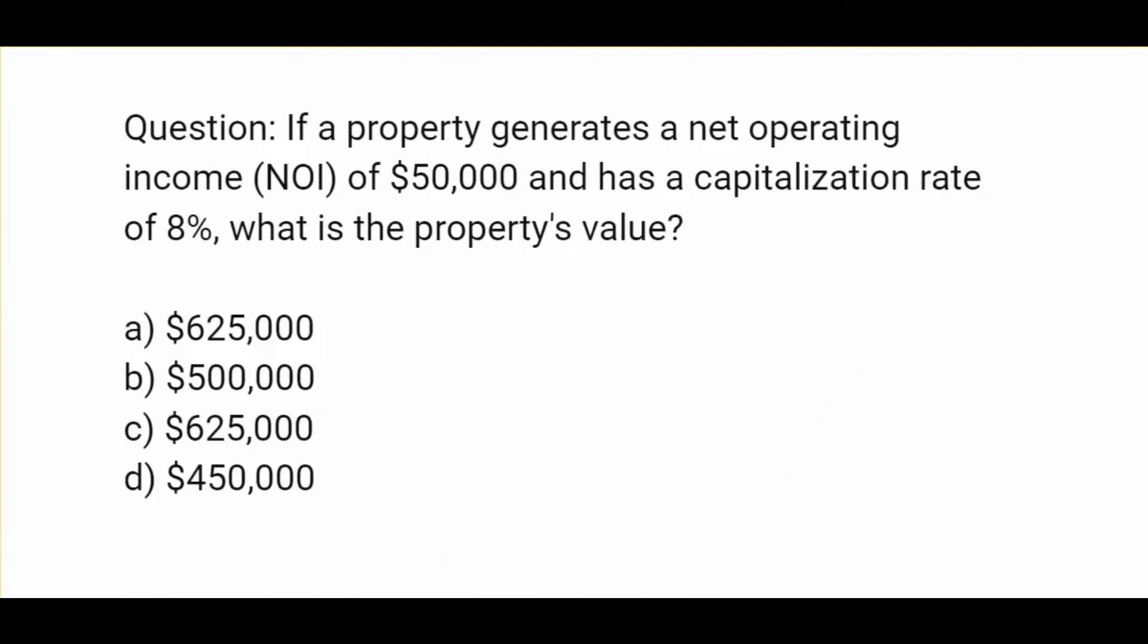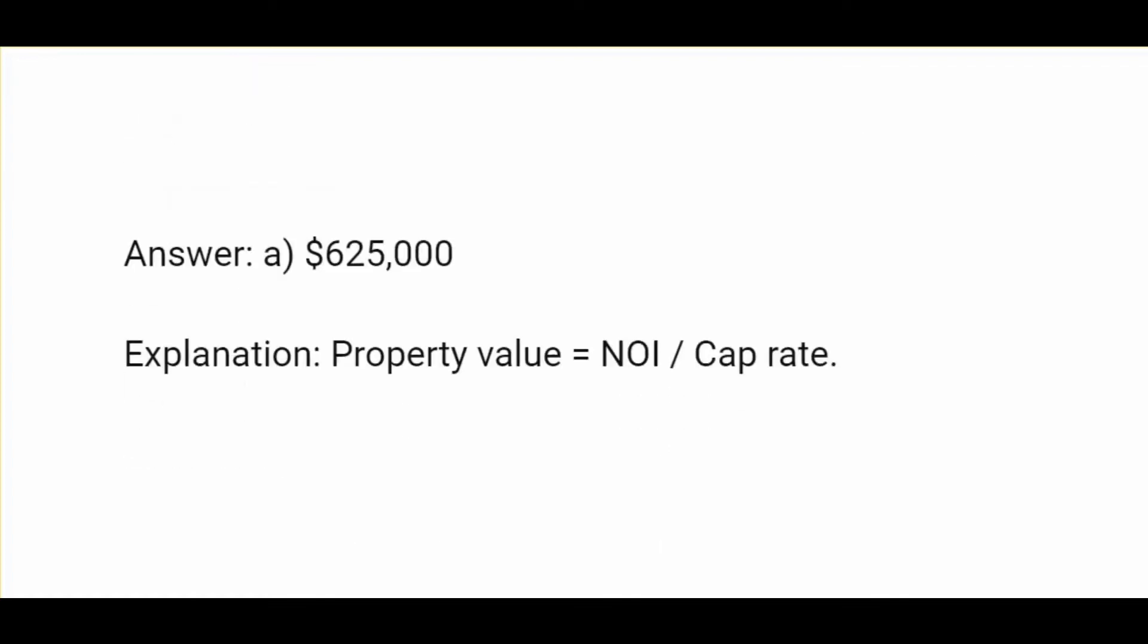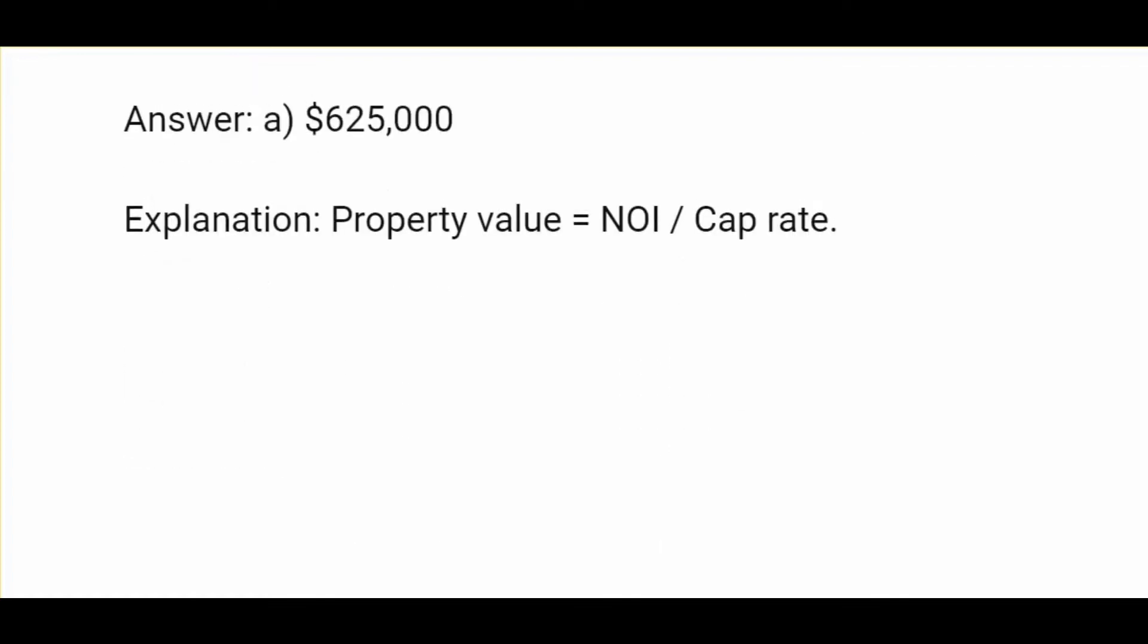If a property generates a net operating income of $50,000 and has a capitalization rate of 8%, what is the property's value? Options are $625,000, $500,000, or $450,000. The answer is $625,000. Property value equals NOI divided by cap rate.